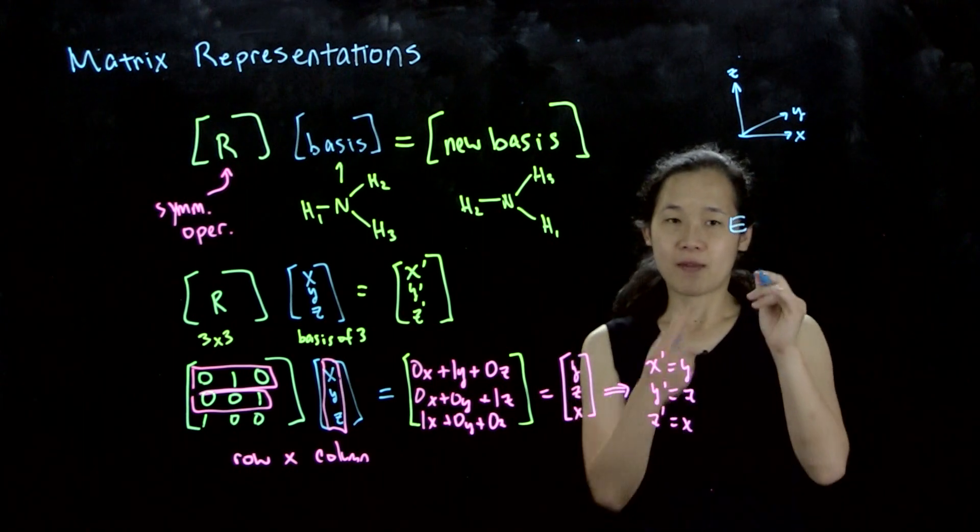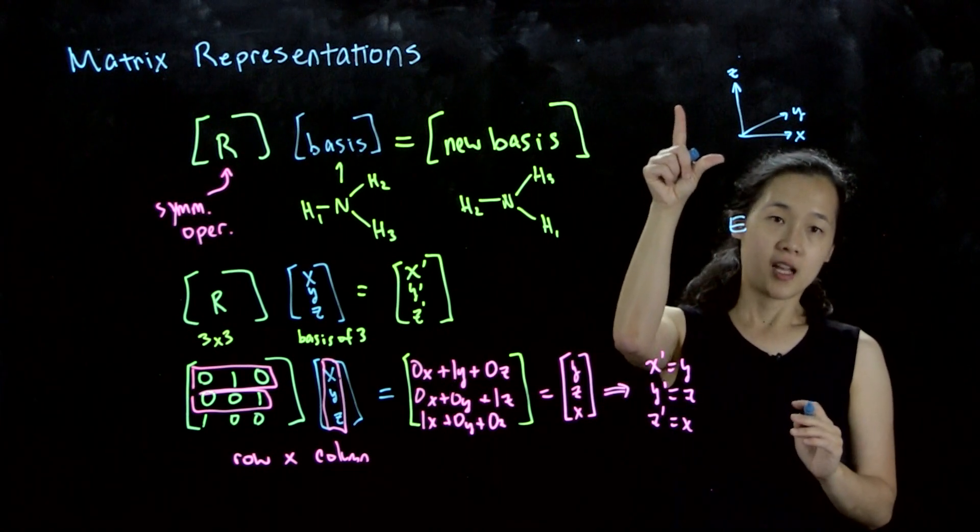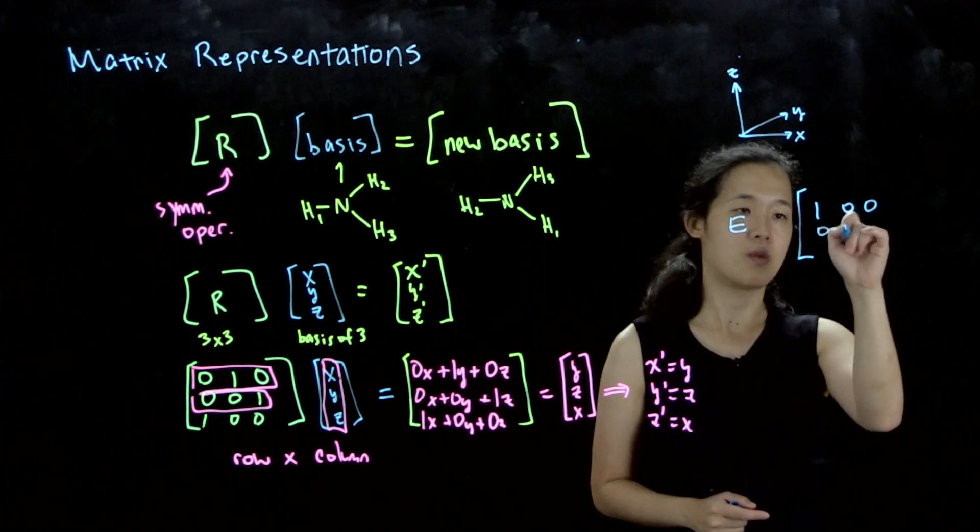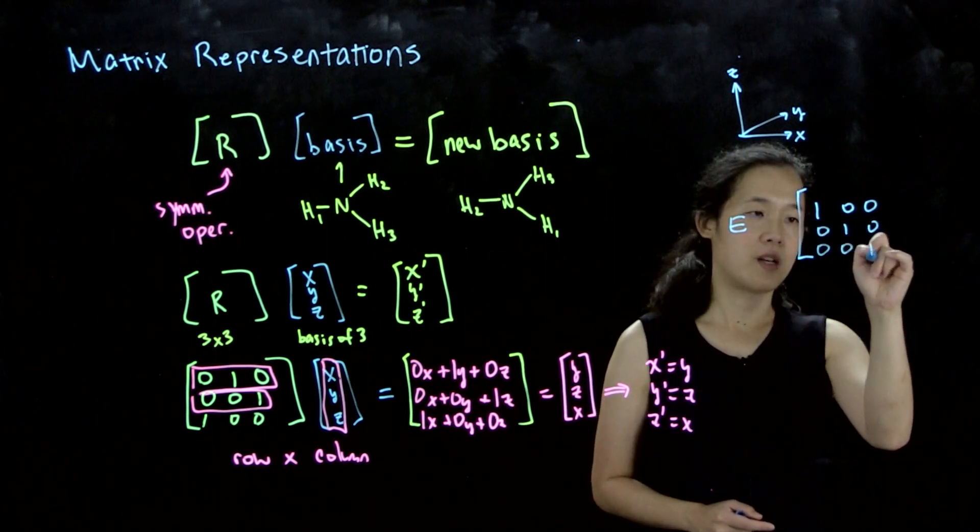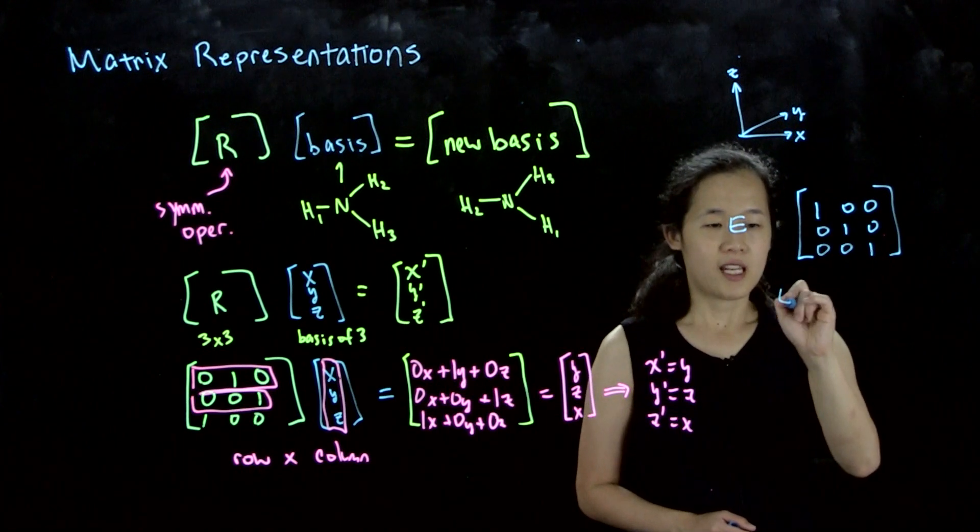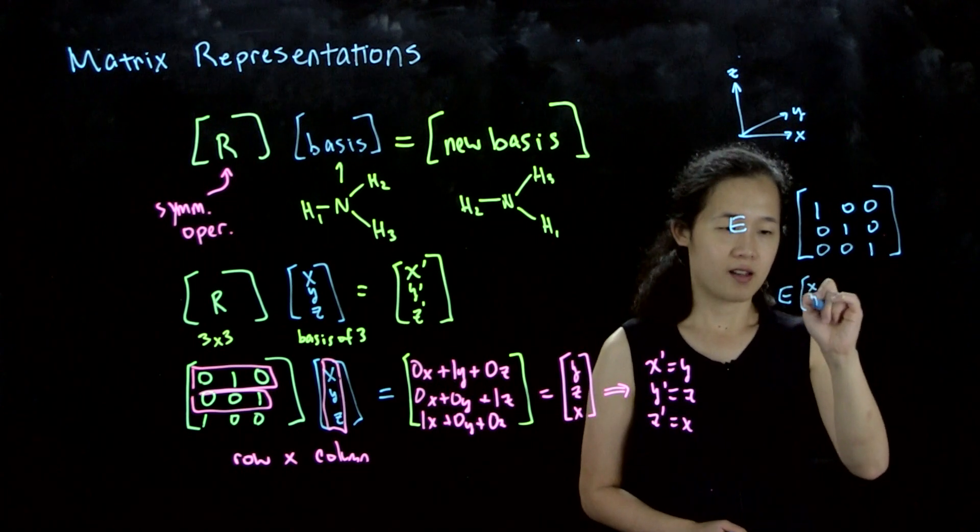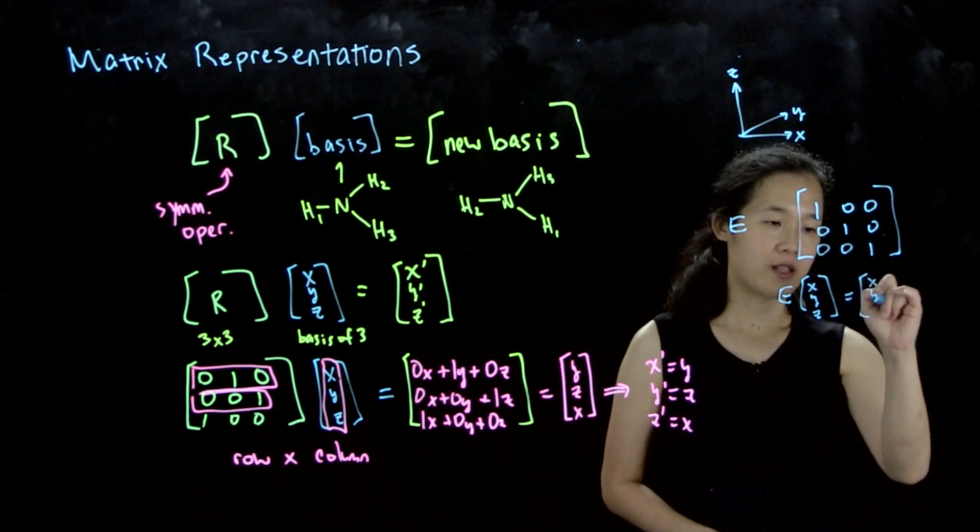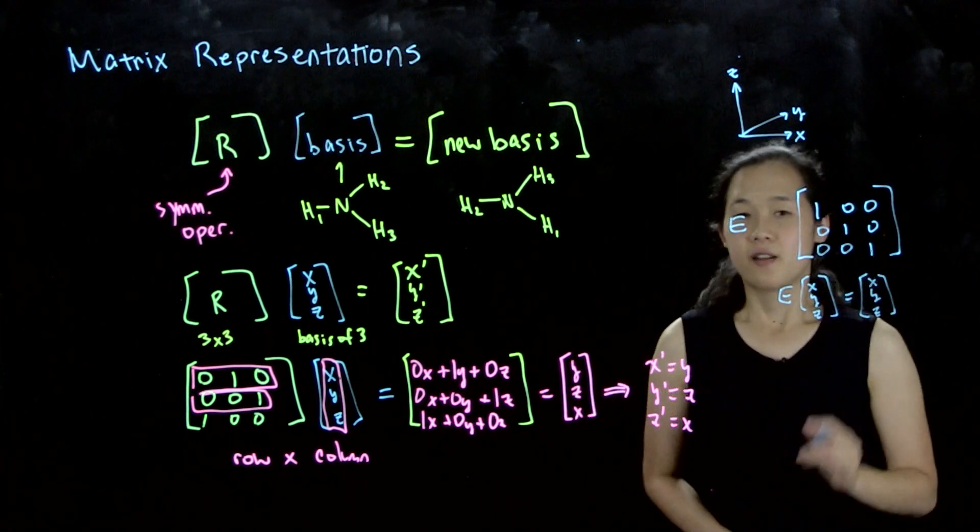E is the identity operation, so this coordinate system remains unchanged. The E matrix is always going to be [1 0 0; 0 1 0; 0 0 1]. This is because if we do E times x, y, z, this must equal x, y, z. We get out what we started with. This is the identity matrix.